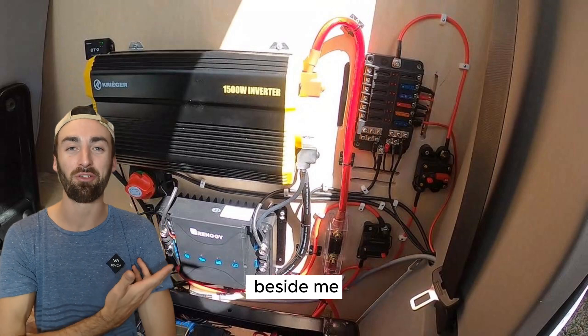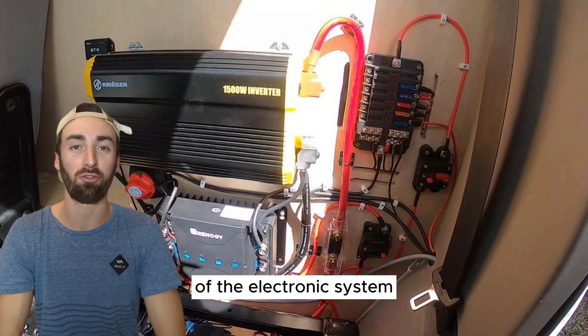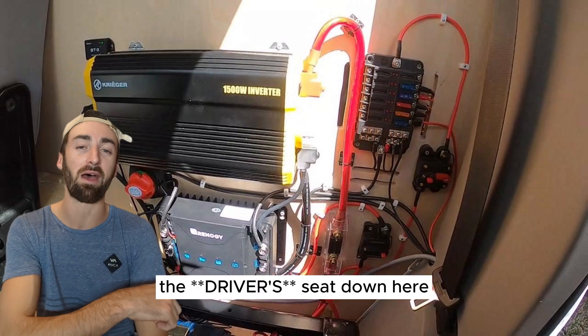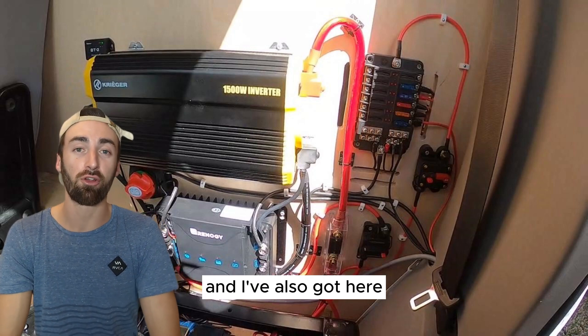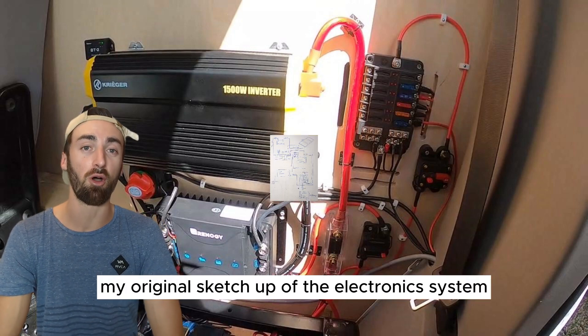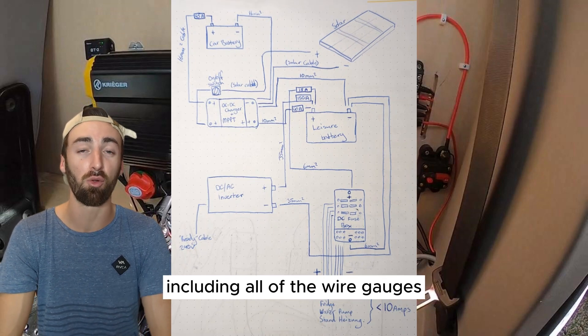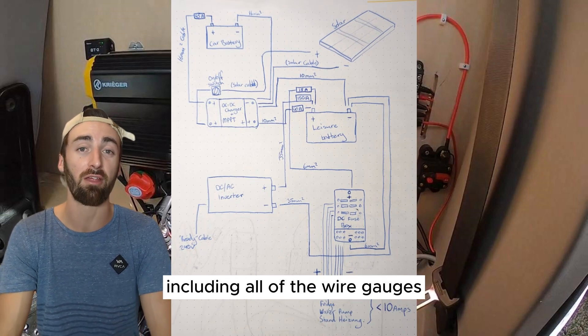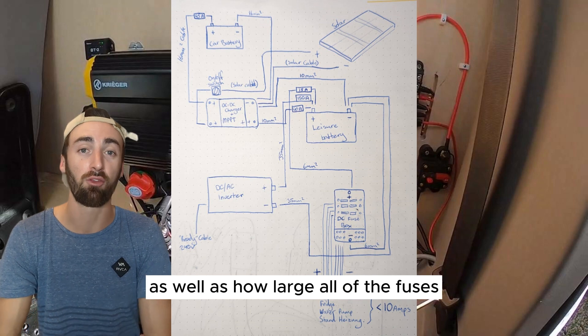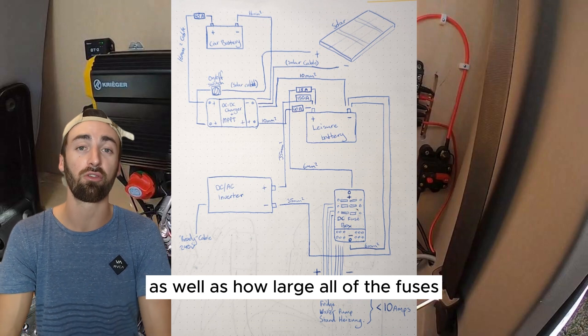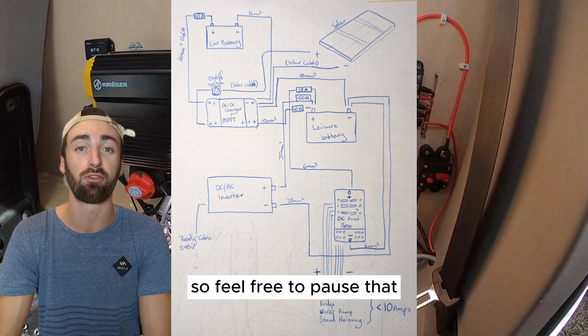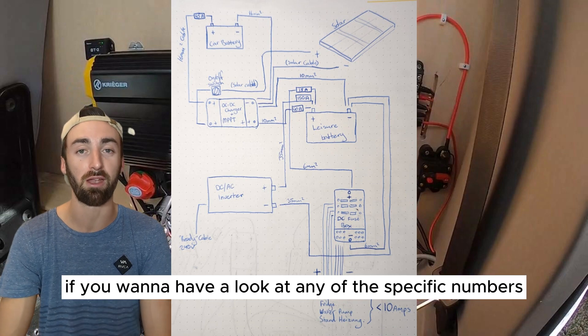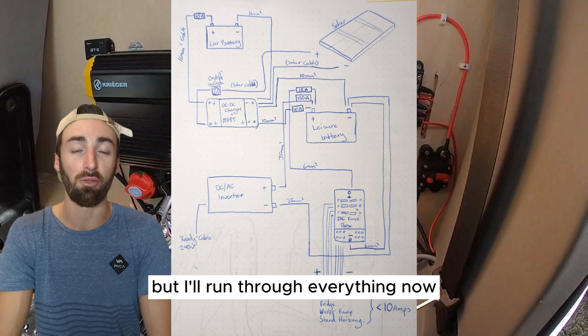As you can see here beside me this is the engine room of the electronic system with the battery underneath the passenger seat down there and I've also got here my original sketch up of the electronic system including all of the wire gauges, how thick all of the wires would be, as well as how large all of the fuses and circuit breakers needed to be. So feel free to pause that if you want to have a look at any of the specific numbers but I'll run through everything now.